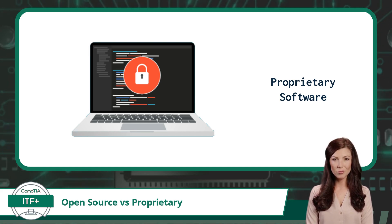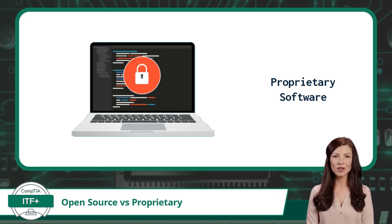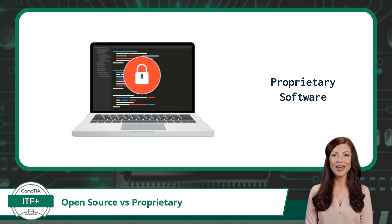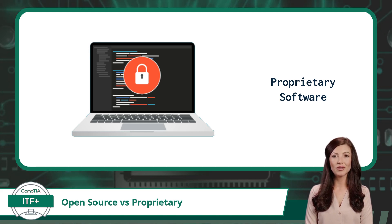Similarly, proprietary applications often come with dedicated support, a polished user experience, and a clear chain of responsibility. The company behind the software takes care of updates and maintenance to ensure it operates as intended. Examples of proprietary software include the Windows and macOS operating systems.